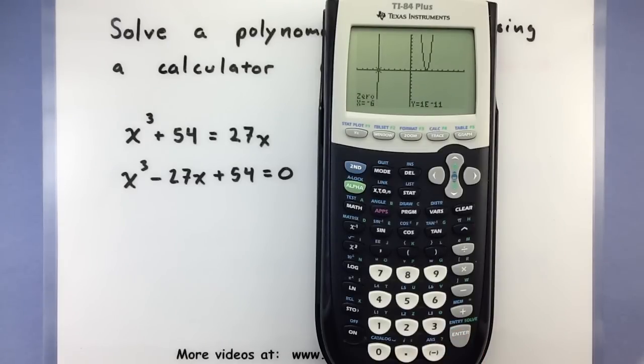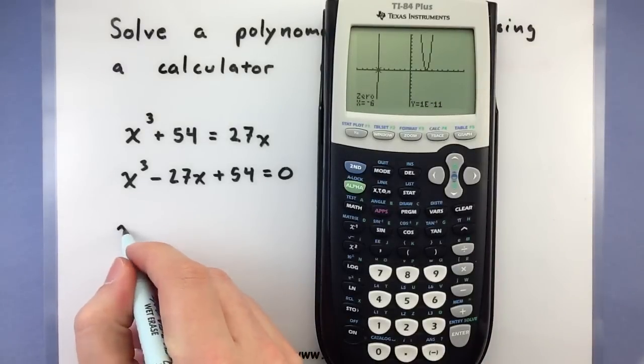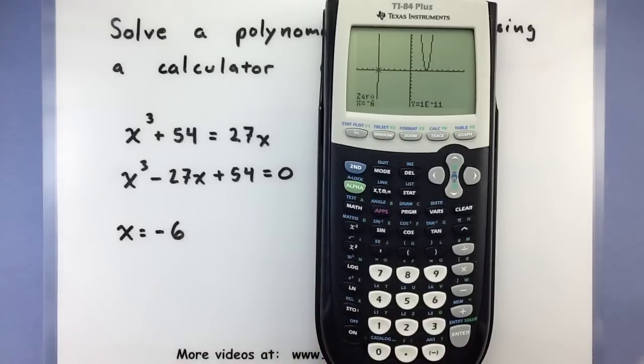The calculator will do its work. And it says that the zero is located at x equals negative 6. So sure enough, that is one of our solutions. x equals negative 6.